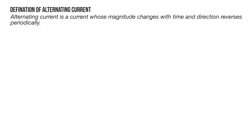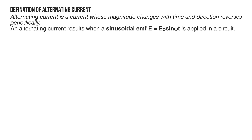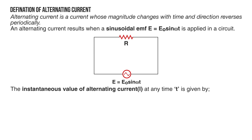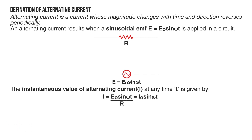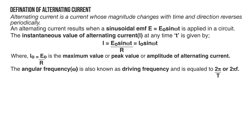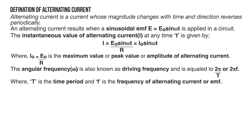Let's start with the definition of alternating current. As the name suggests, alternating current is a current whose magnitude changes with time and direction reverses periodically. An alternating current results when a sinusoidal emf equal to E₀ sine(ωt) is applied in a circuit. If R is the resistance, then by Ohm's law the instantaneous current at any time t is given by I = I₀ sine(ωt), where I₀ = E₀/R is the peak value. The angular frequency ω is also known as the driving frequency and equals 2π/T or 2πf.